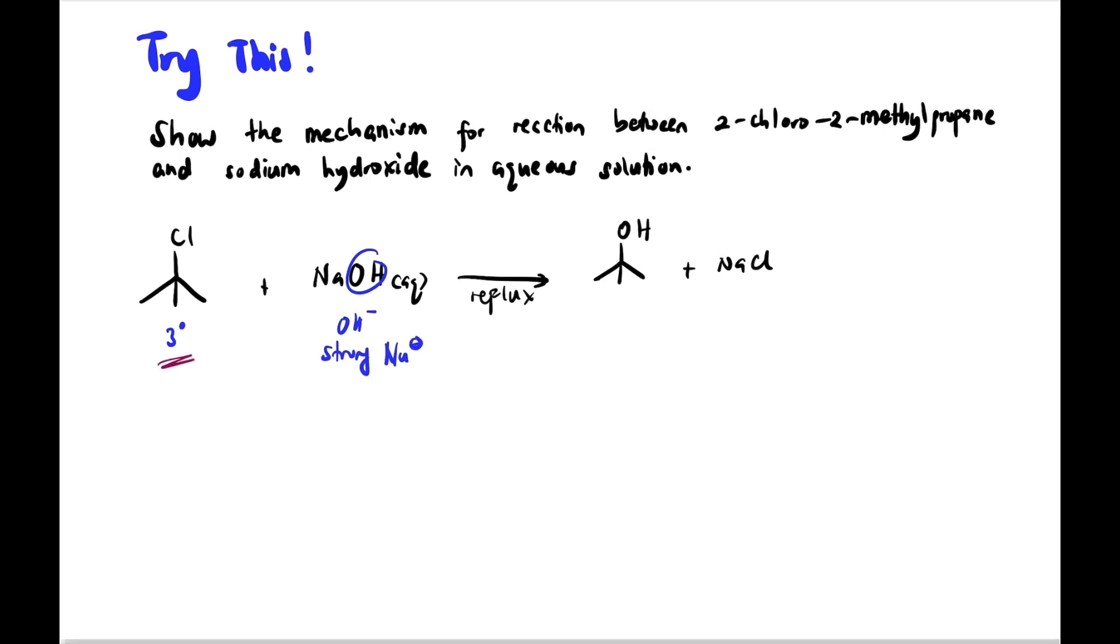But because its class is tertiary, guys, it will never do SN2. It needs to be done one by one, SN1, because there are too many obstructions there. We have 3 carbons there. That's what we call high steric hindrance. Too many obstructions. So proceed with SN1, guys, even though strong nucleophile.